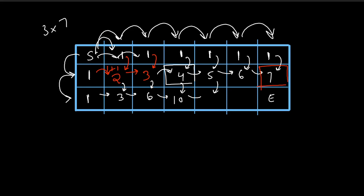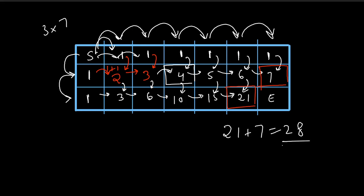Six plus fifteen gives us twenty-one. So if you want to reach that position there are twenty-one possible ways. The final index has seven from above and twenty-one from the left, so twenty-one plus seven gives us twenty-eight. There are twenty-eight possible ways to reach from zero comma zero to the right-bottom part of the three by seven grid.